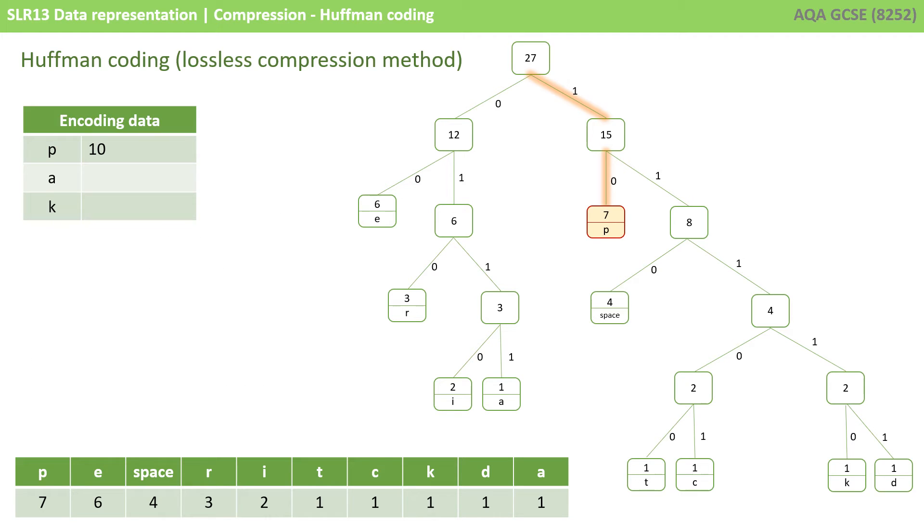Given the Huffman tree shown here, how could the character P be encoded? Well, you can see that every branch in our binary tree is given a 0 or a 1, depending on whether we're branching left or we're branching right. We can provide the path taken to reach the letter P. It's 1 followed by 0, so branching right and then left. So, 1, 0 can be encoded to represent the letter P.